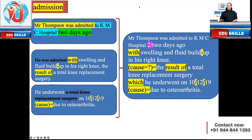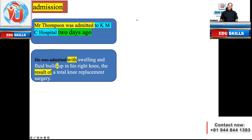Let me highlight the connectives used: 'with' — a preposition showing association; 'the result of' — showing cause; 'which' — a relative clause connector; 'on 10/12/19' — showing timing; 'due to' — showing cause. Also note: never write the digit '2' — write 't-w-o.' As per the general rule of English, numbers one to nine should be written as words, not digits. So 'two days ago' — write it in full.